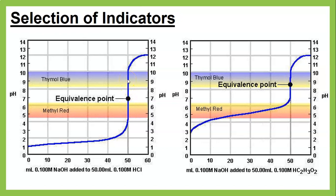If you picked an indicator that changes color around pH 9, you would have gone way too far. Thymol blue would be a good choice if its color-change range (yellow to blue) aligns near the equivalence point. By the time it turns blue, you might be slightly past, but that's far better than being off by several pH units.